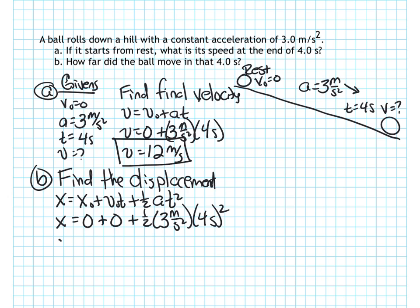Okay, so x is equal to, let's see, 4 seconds squared is 16. Half of 16 is 8. 3 times 8 is 24. So x is equal to 24 meters.